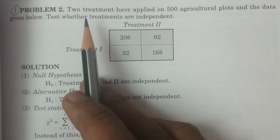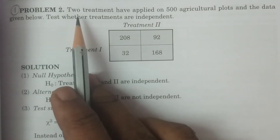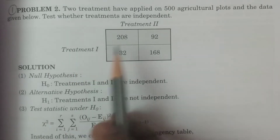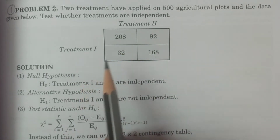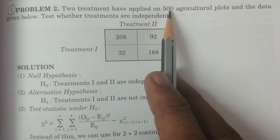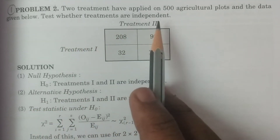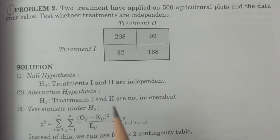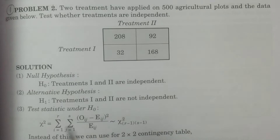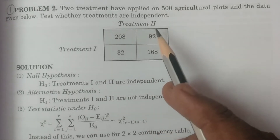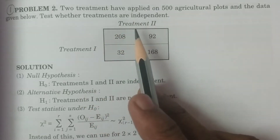This is a small sample test. Two treatments have been applied on 500 agricultural plots and the data is given below. We need to test whether the two treatments are independent. This calls only for the chi-square test for independence of attributes.